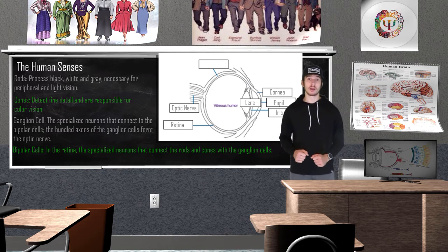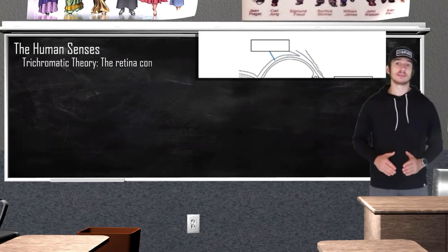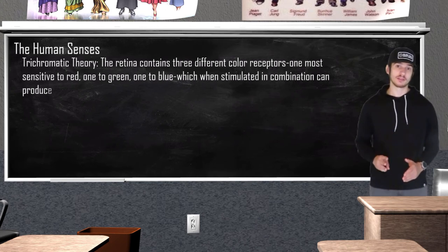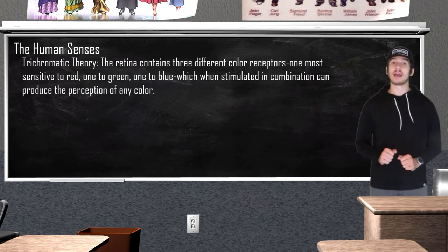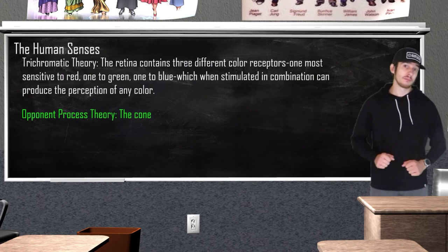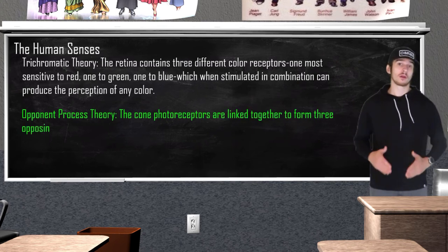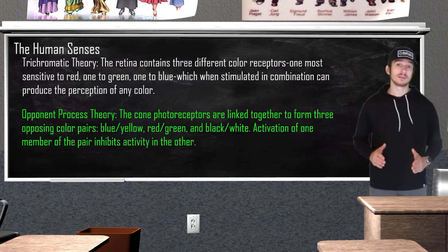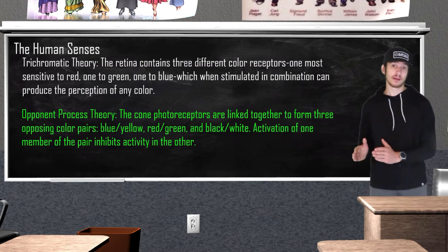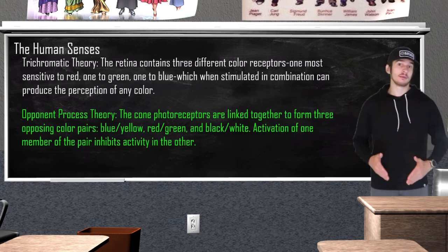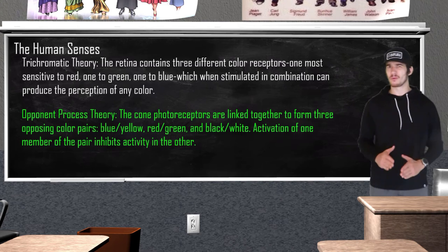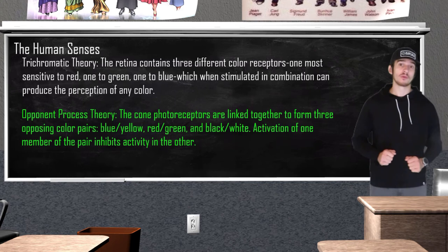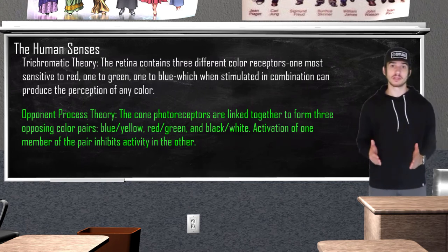Two major theories explain our perception of color. The trichromatic theory states that the eye has three color receptors — one sensitive to red, one to blue, and one to green — and when these are stimulated, we can produce any combination of color. The opponent process theory states that opposing retinal processes work in color pairs: blue and yellow, red and green, and white and black. Some cells are stimulated by red and inhibited by green, or stimulated by yellow and inhibited by blue. When looking at a red apple, the green photoreceptors are being inhibited while the red photoreceptors are being excited, allowing us to perceive red.